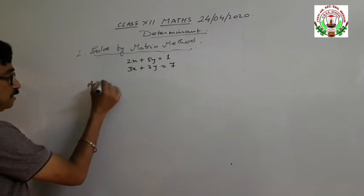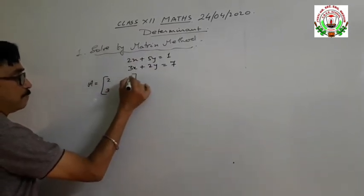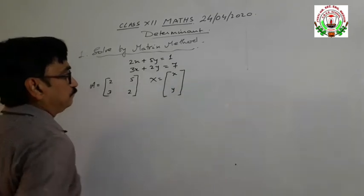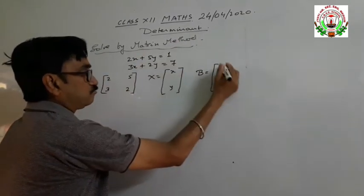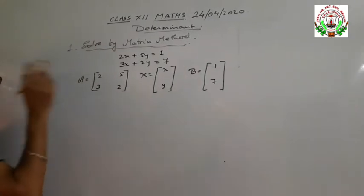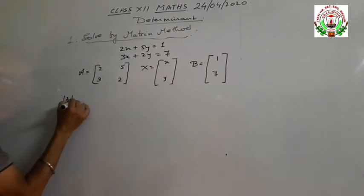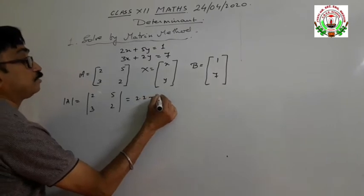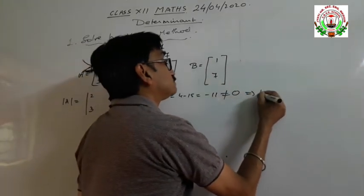Our matrix A will be 2 by 2: elements 2, 3, 5, 2. Capital X represents variables X and Y, and B represents the constants on the right side of the equations: 1 and 7. Before finding the inverse, we first find the determinant value of A: 2 into 2 minus 3 into 5, which is 4 minus 15, equal to minus 11, which is not equal to 0. So we can say the inverse exists.